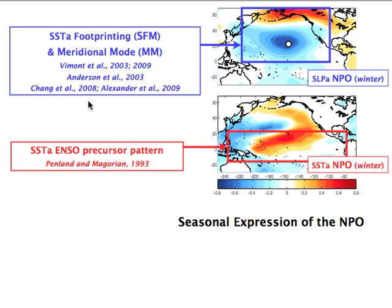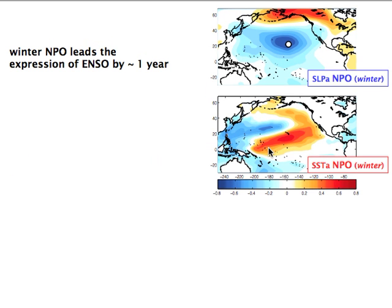Further work by Dan, Bruce, Mike, and Chang on the meridional mode shows that there is a dynamics by which variability of the atmosphere here can actually trigger warming in the SST, which leads to warming in the central tropical Pacific. So the idea is that this winter NPGO leads the expression of ENSO by about one year.